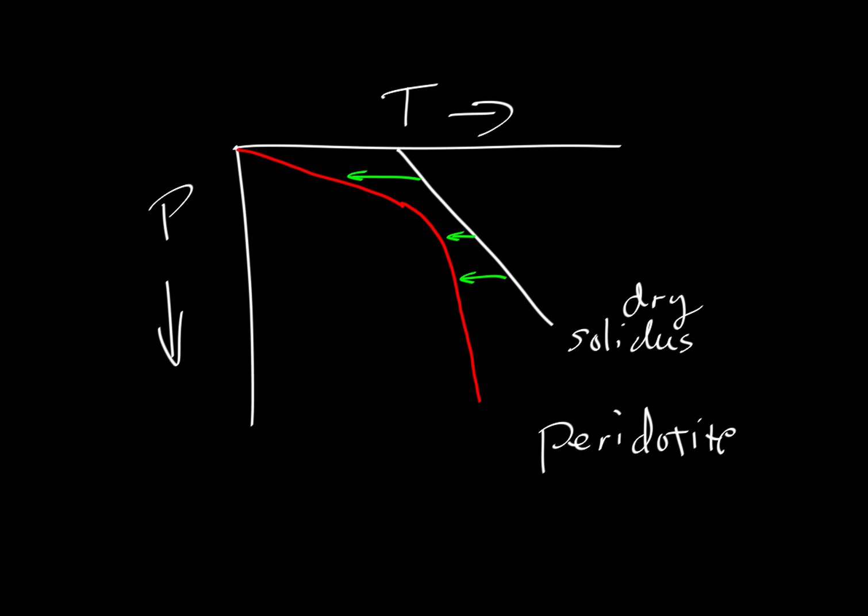However, if we add water to the mantle, if we have a wet peridotite instead of a dry peridotite, then its new solidus would look something like this. So what we're drawing here is the wet peridotite solidus. So this solidus is fixed for a fixed composition. If we change the composition by adding water, then we allow melting to occur at much lower temperatures than it ordinarily would.